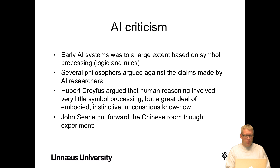The early AI systems were largely based on symbol processing, logic, and rules. Several philosophers argued against the claims made by AI researchers. For example, Hubert Dreyfus argued that human reasoning involved very little symbol processing but a great deal of embodied, instinctive, and conscious know-how.